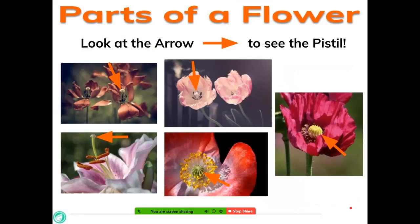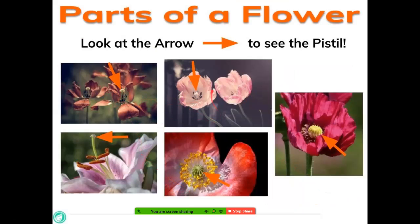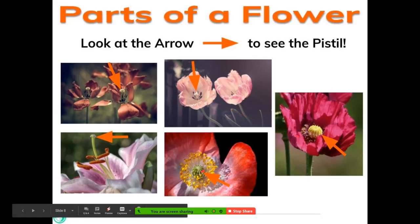Now let's look at the pistil. As you can see, it looks a little bit different on each flower — here in the middle, and this one's really different. Again here and here.